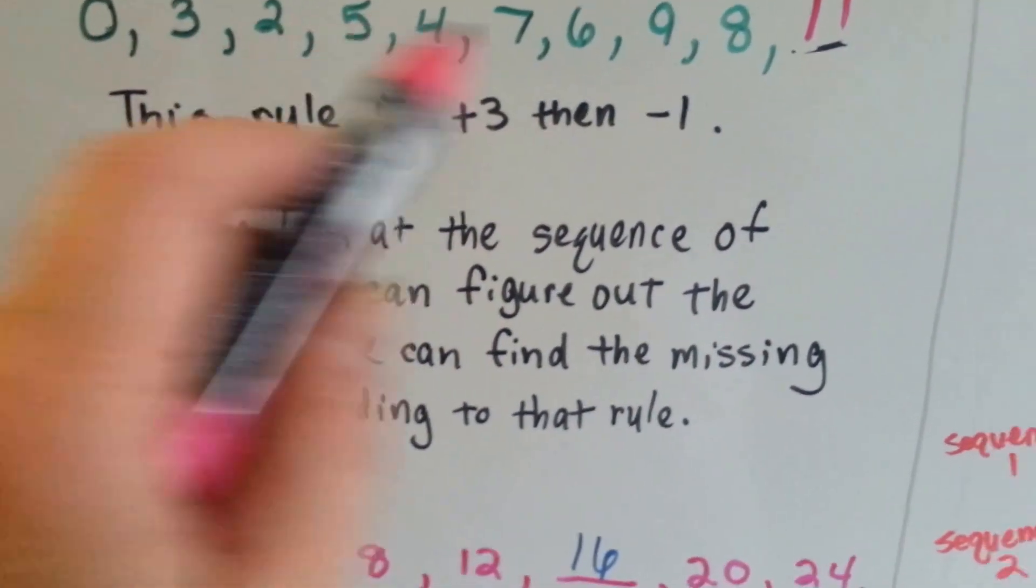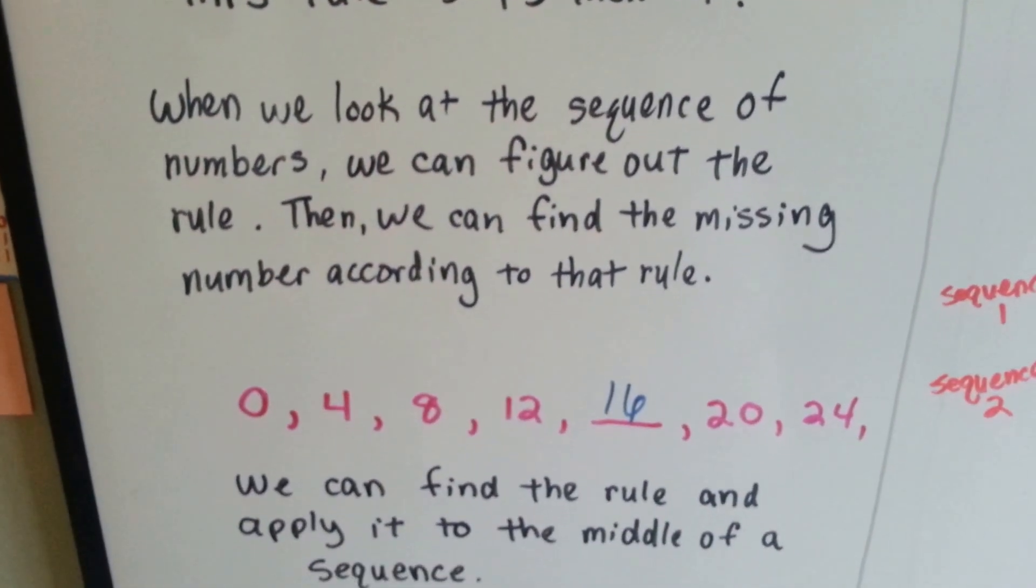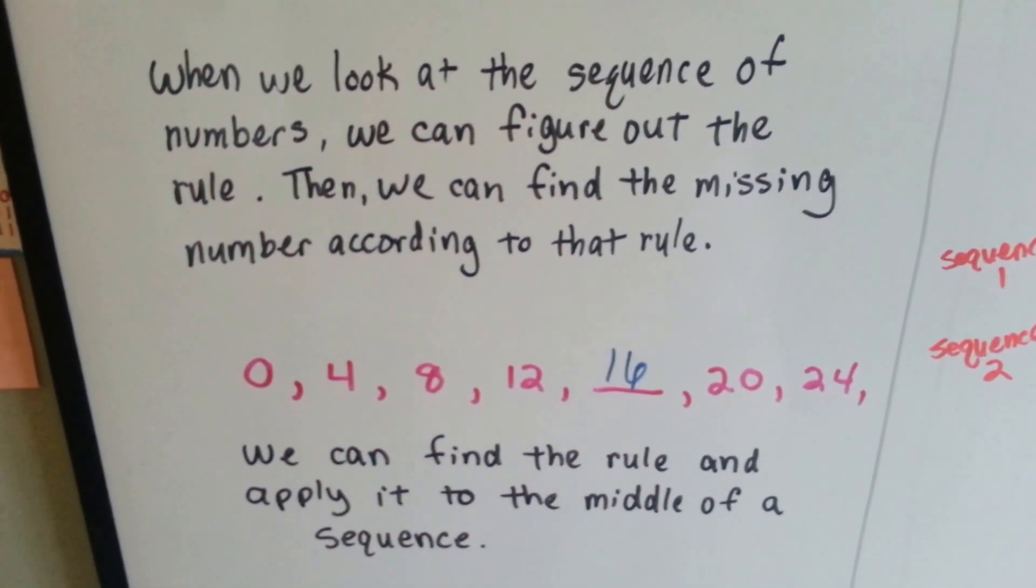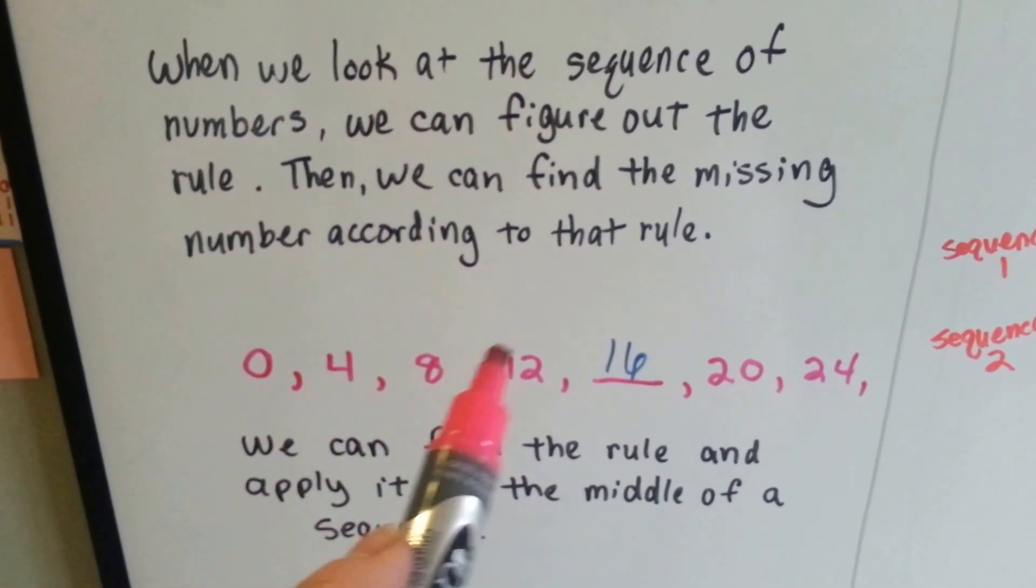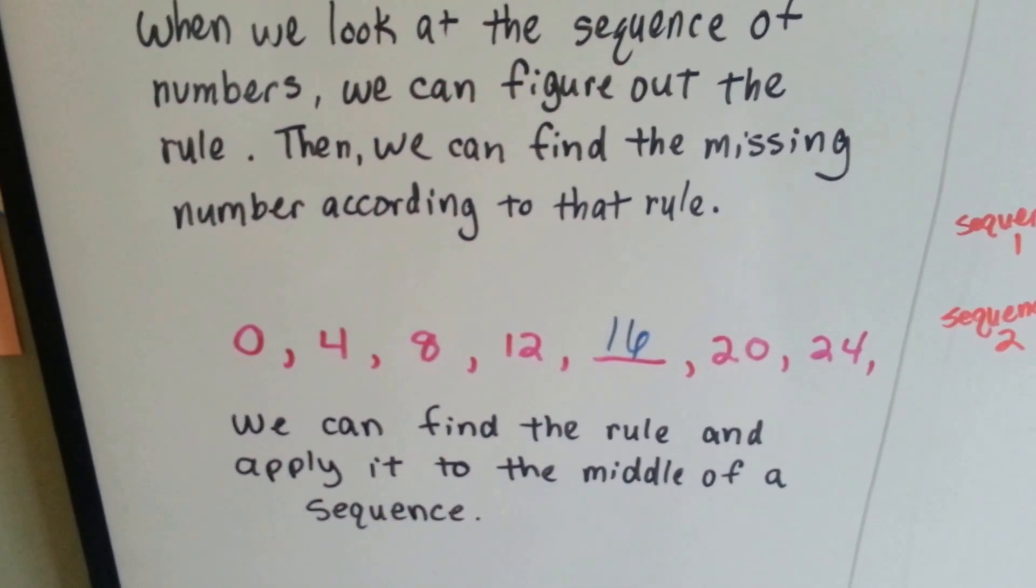We look at the sequence of numbers, and we can figure out the rule. Then we can find the missing number according to that rule. The missing number here would have been 16, because it's going up by 4s. We can find the rule and apply it even to the middle of a sequence.